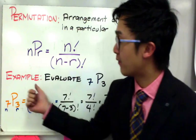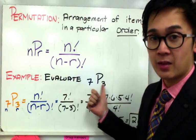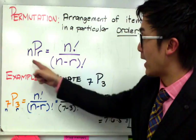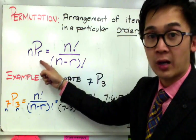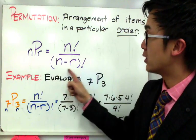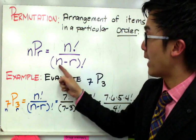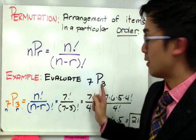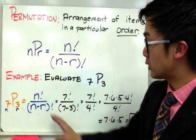let's have and evaluate 7P3 where 7 is your n and 3 is your r. Now to use the formula, just use substitution and we will replace our n by 7 and r by 3. So in our solution,